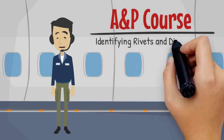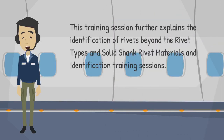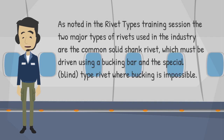Welcome to this training session on identifying rivets and dimensions. This session further explains rivet identification beyond the rivet types, solid shank rivet materials, and identification training sessions. As noted in the rivet types training session, the two major types of rivets used in the industry are the common solid shank rivet, which must be driven using a bucking bar, and the special blind type rivet where bucking is impossible.